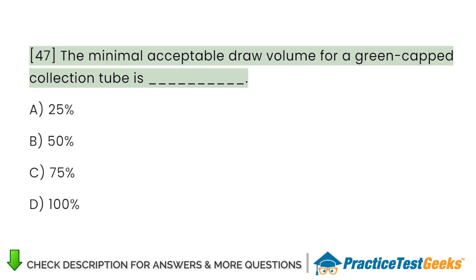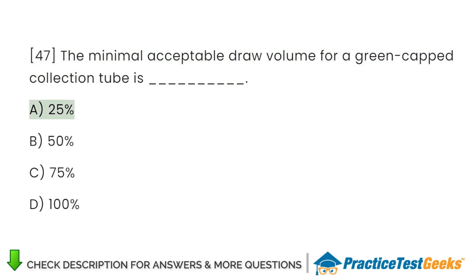The minimal acceptable draw volume for a green-capped collection tube is A. 25%. B. 50%. C. 75%. D. 100%.